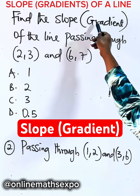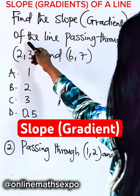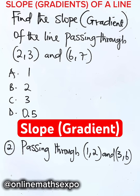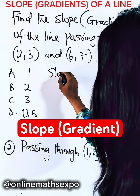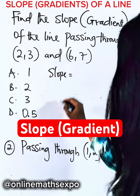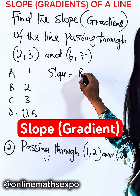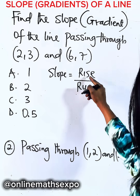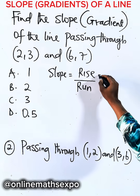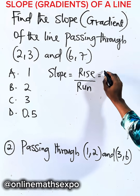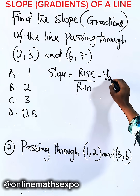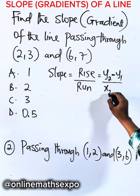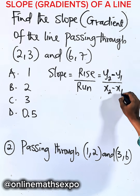We are asked to find the slope or the gradient of the line that passes through this. When you have slope or gradient, we know it is our rise over the run. And our rise is always our change in y, which is y2 minus y1. And our run is the change in x, which is x2 minus x1.